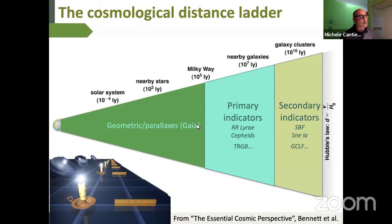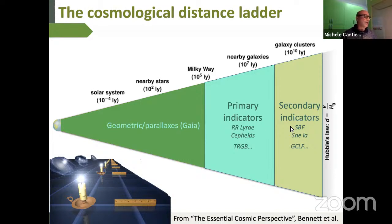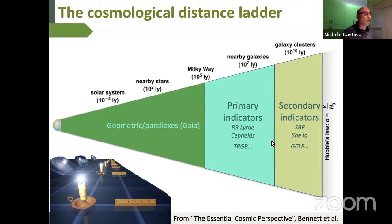With Gaia, we calibrate primary indicators like Cepheids and TRGB. With those primary indicators, we calibrate secondary indicators like SBF, supernovae, globular cluster luminosity functions, and others. The ideal situation is to have a few but different indicators to cover the whole distance ladder.